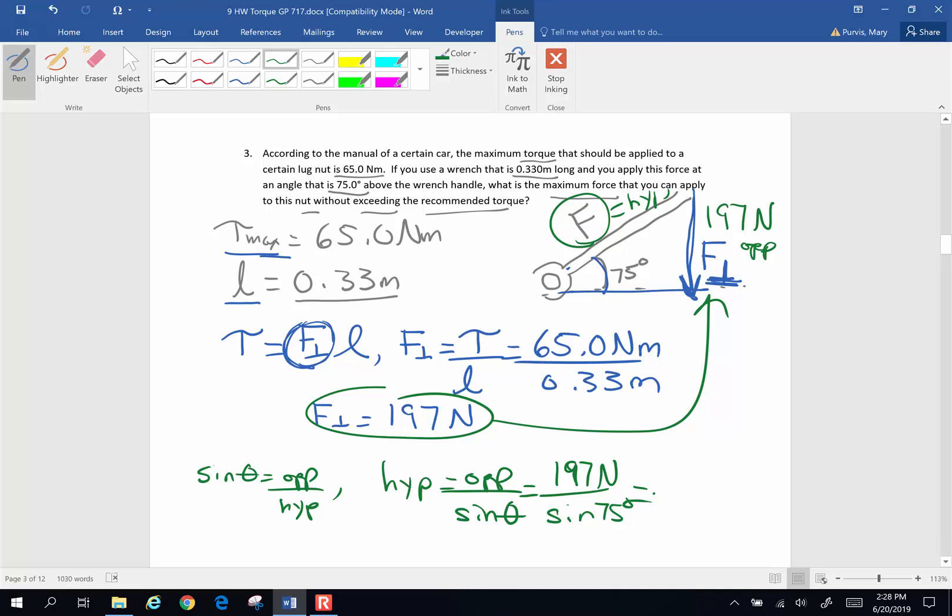So 197 divided by the sine of 75. And I ended up with 204 newtons. And that will do for the first three problems. Alright, we'll see you later.